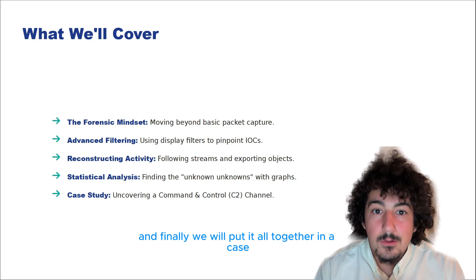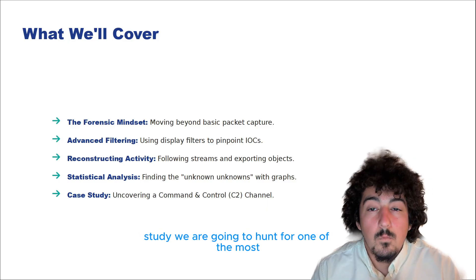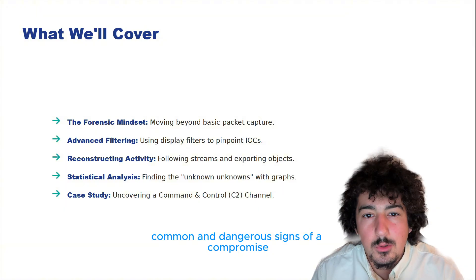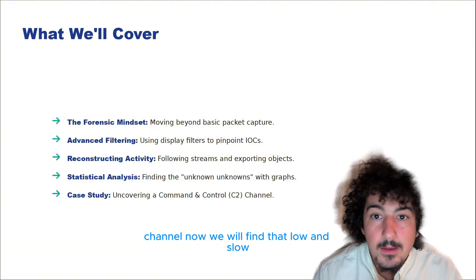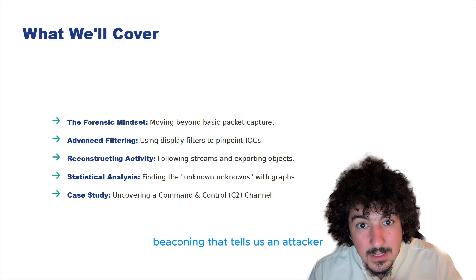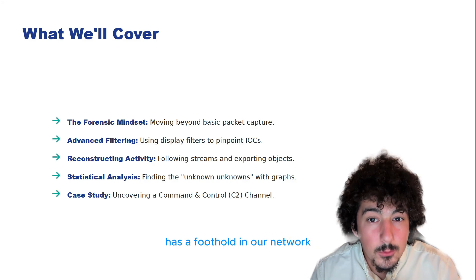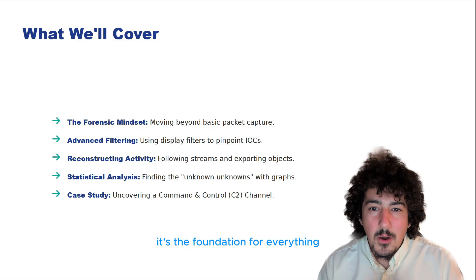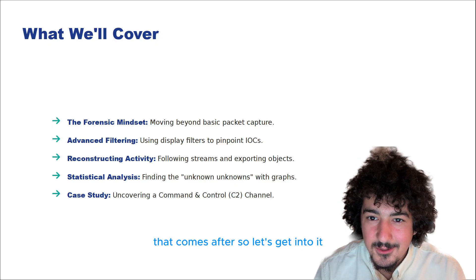And finally, we will put it all together in a case study. We are going to hunt for one of the most common and dangerous signs of a compromise — a command and control, or C2 channel. We will find that low and slow beaconing that tells us an attacker has a foothold in our network. Now this is a packed lecture — it's the foundation for everything that comes after. So let's get into it.